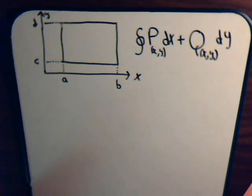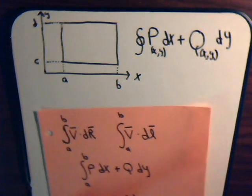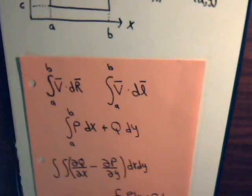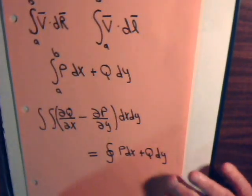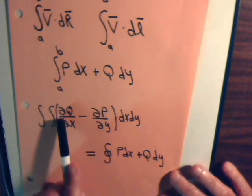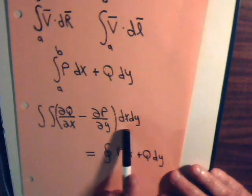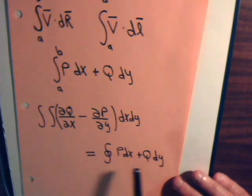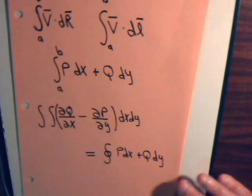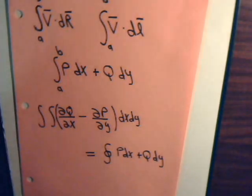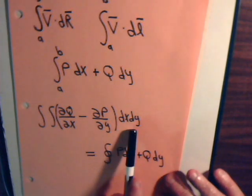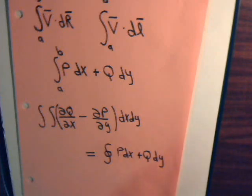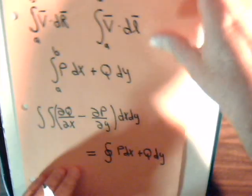This is part two of our vector series where we're dealing with Green's Theorem. In the previous video we proved that the double integral of Q with respect to X dx dy equals the line integral Q dy. Now in this video we want to prove the rest of the formula. Then we can just add the two parts together and we'll have the entire equation.